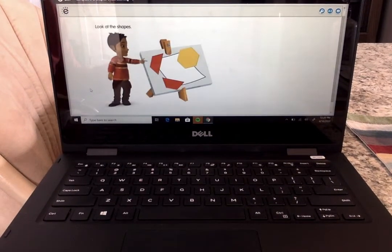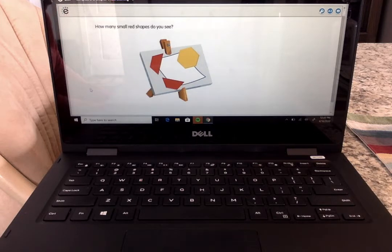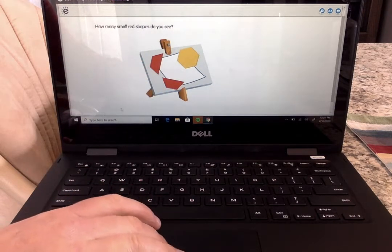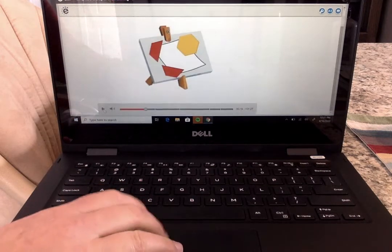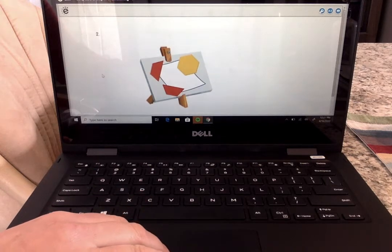And we're going to watch our little robot dude. Look at the shapes. How many small red shapes do you see? So how many red shapes do you see? There's our little play button. There it is. Yep. Should have said two.